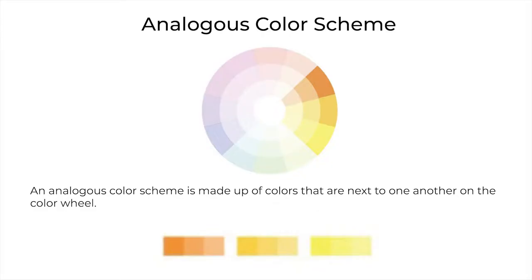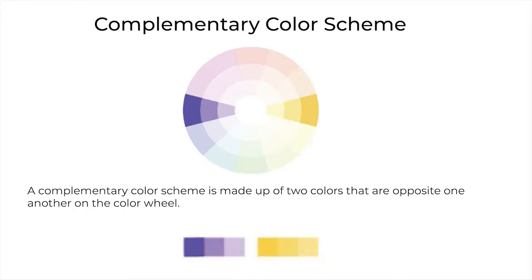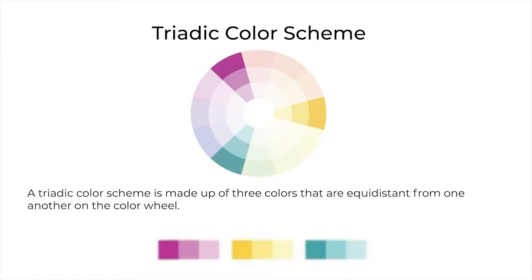The second is analogous: colors that are next to one another on the color wheel. The third is complementary: two colors that are opposite one another on the color wheel. The fourth is triadic: three colors that are equal distance from one another on the color wheel.